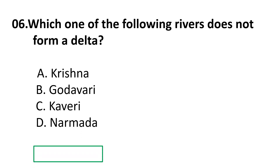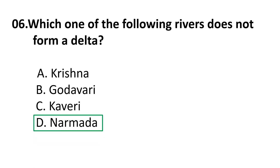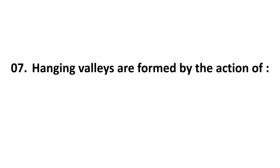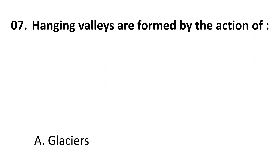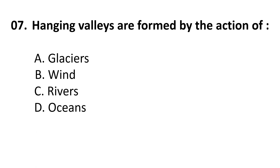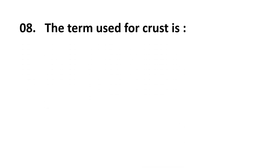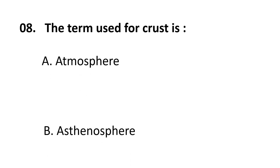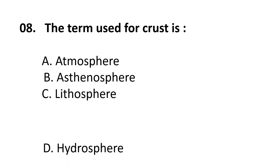The correct answer for Question 6 is D) Narmada. Question 7: Hanging valleys are formed by the action of — choices are: A) Glaciers, B) Wind, C) Sea, D) Rivers. The correct answer is A) Glaciers. Question 8: The term used for the crust is — choices are: A) Atmosphere, B) Asthenosphere, C) Lithosphere, D) Hydrosphere.